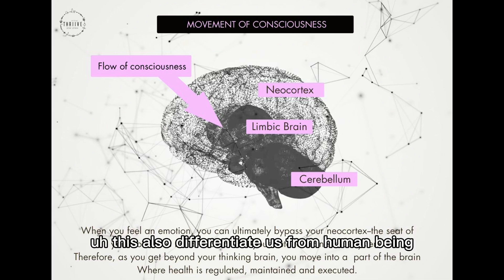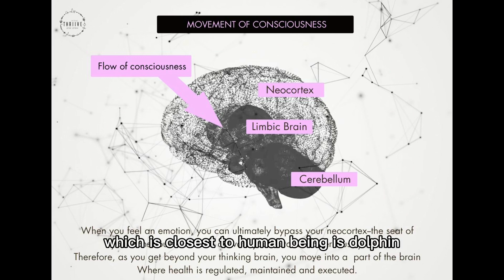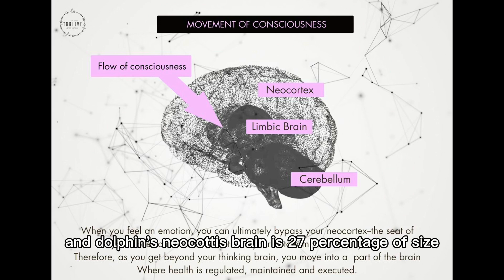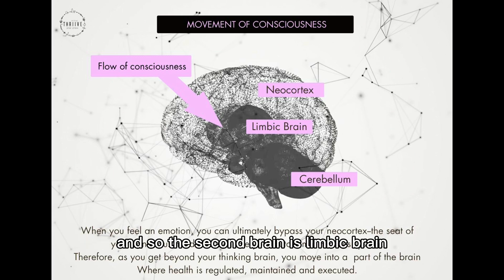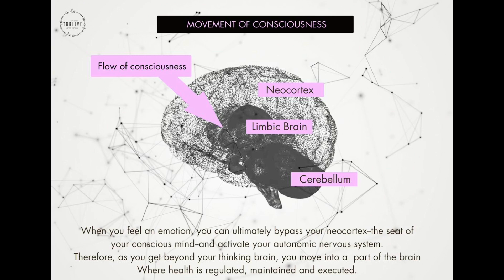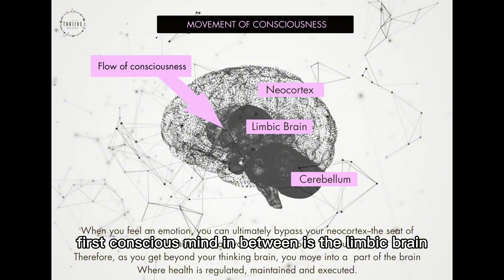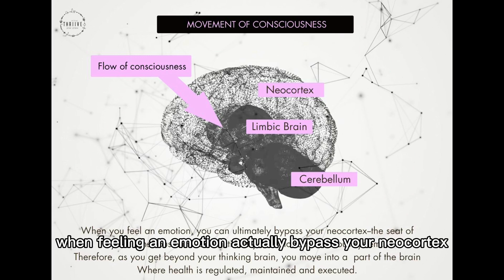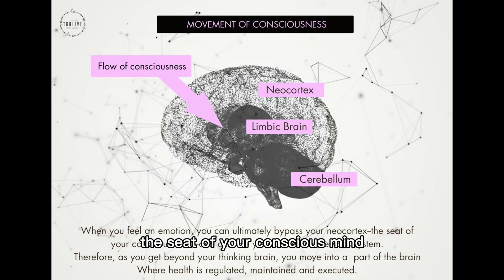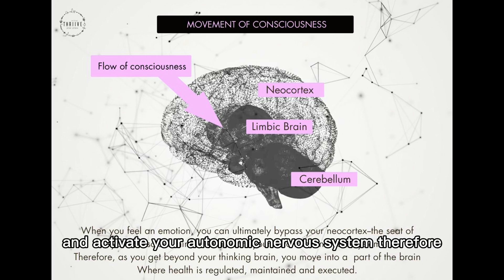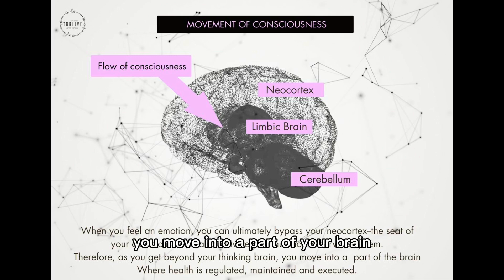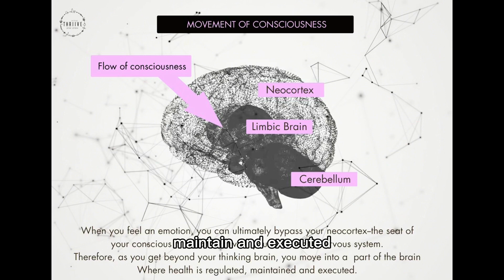This diagram shows that 40% of the brain is the neocortex, which also differentiates us from other animals. The closest to humans is the dolphin, whose neocortex is 27% of brain size. The second brain is the limbic brain and the third is the cerebellum at the back of our head, which is our subconscious mind. When feeling and emotion bypass the neocortex — the seat of conscious mind — they activate your autonomic nervous system, moving you into the part of your brain where health is regulated, maintained, and executed.